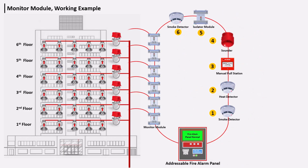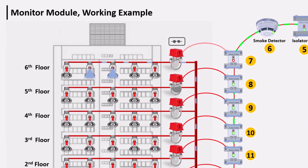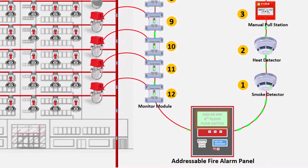We connect the flow switch with the monitor module and assign an address to each module, then define this address name in the fire alarm panel. Currently each flow switch is in a normal condition. If a fire event occurs, the sprinkler breaks and the zone's flow switch operates. When the flow switch operates, the connection status changes, activating the monitor module, and it sends a signal to the fire alarm system.